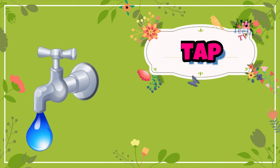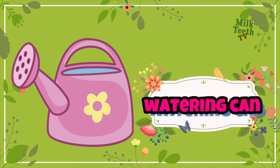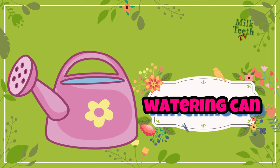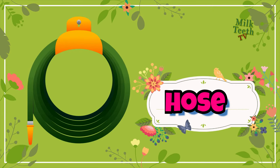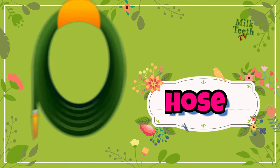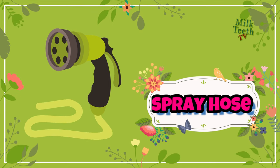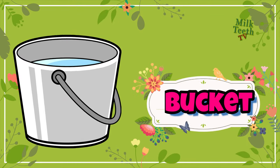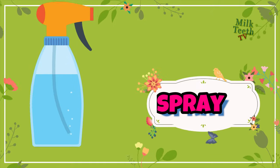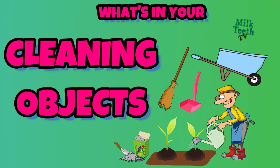Watering objects. Tap — the source of water for watering the plants. Watering can — used to water the plants. Hose — a rubber or plastic tube used to transport water from taps to the garden. Spray hose — a type of sprayer attached with the hose to water the plants. Bucket — a container used to store water. Sprayer — a bottle filled with water with a sprayer to water the plants.